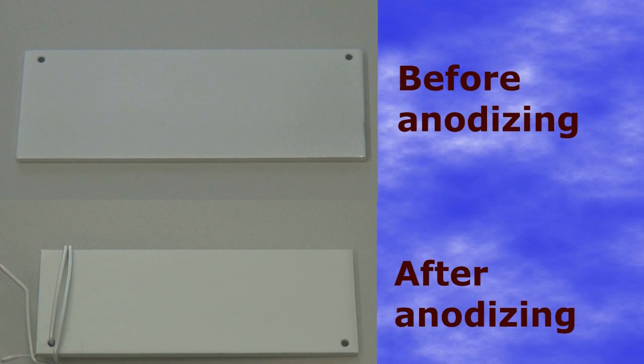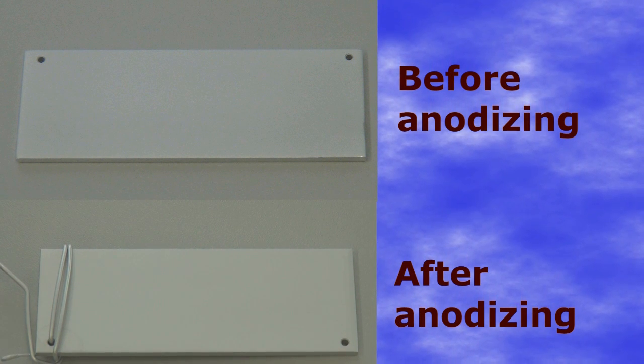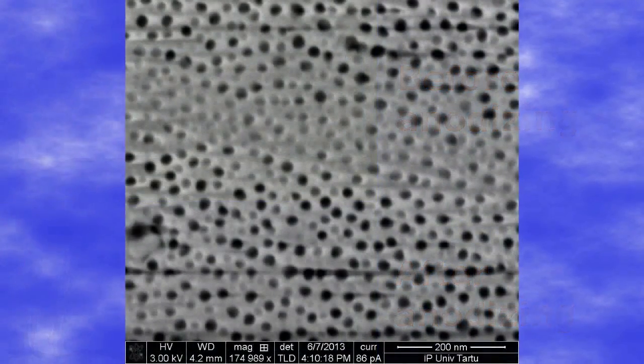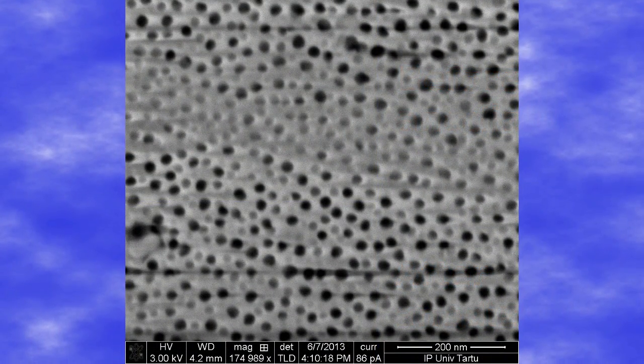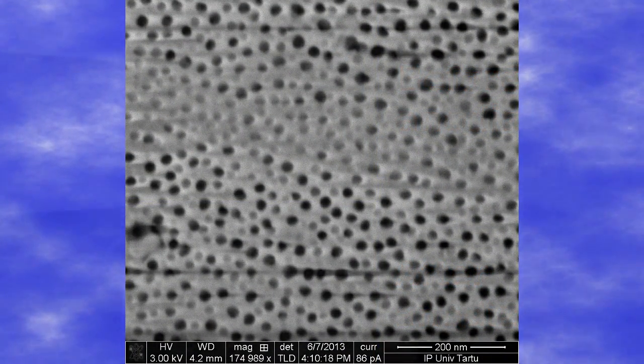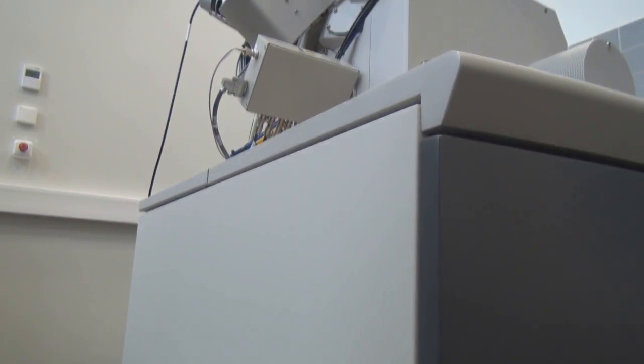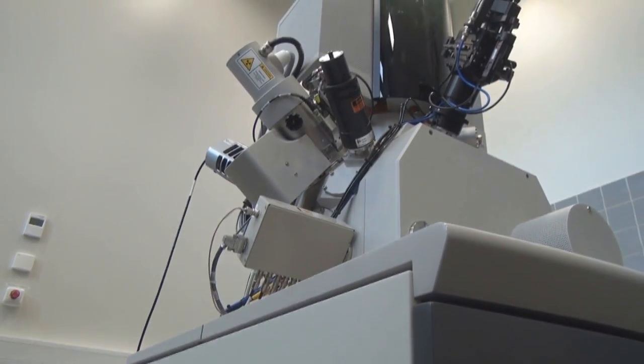As you can see, the anodized plate has a slightly different appearance. This is due to the nanoporous oxide layer that has formed on the surface, and this is only visible with the help of a powerful scanning electron microscope.